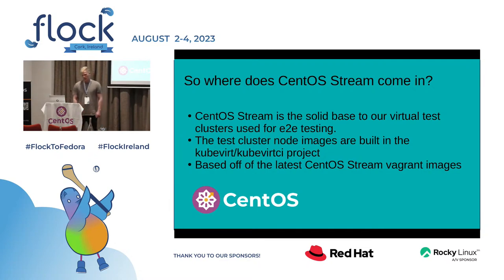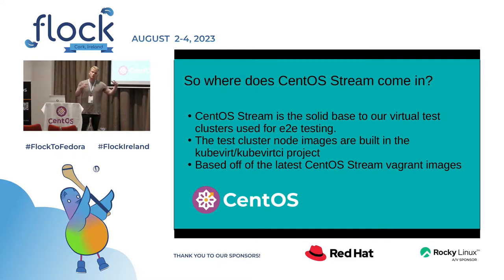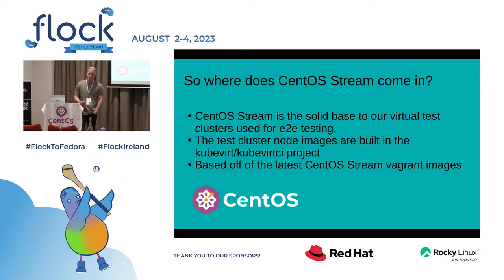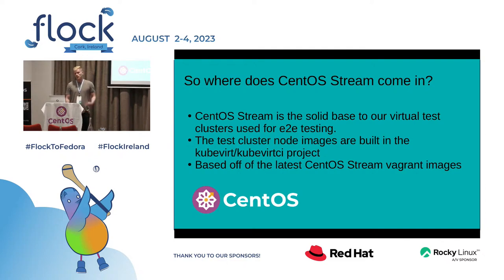So where does CentOS Stream come in? CentOS Stream is the solid base that we use for our virtual test clusters, which are then scheduled to larger workloads clusters. These clusters are spun up for our end-to-end testing. There's a specific sub-project within the KubeVirt organization called KubeVirt CI, and this project is responsible just for building these cluster providers. Overall, the virtual cluster providers are based off of CentOS Stream vagrant images — we basically take the latest CentOS Stream vagrant image continually.